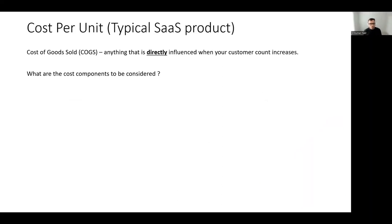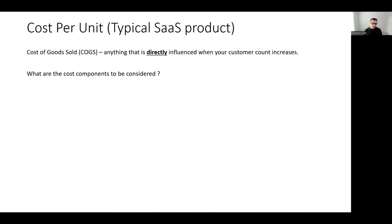Now let's look at cost per unit. I'll use a typical SaaS product as an example. Another term you often hear is COGS — different companies and financial institutions use different terminologies, but I'll use this to mean any amount of money you spend that is directly influenced by the number of units sold or number of customers. Anything that influences your cloud spending or device spending counts as cost here.